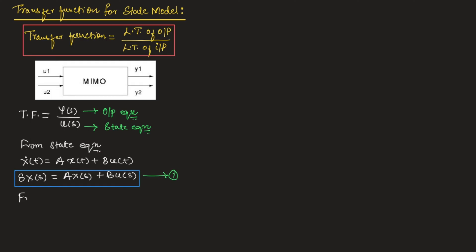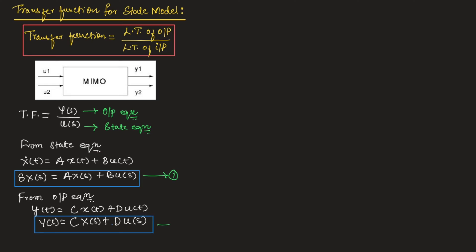Now let us consider the output equation. From the output equation, we can write Y(T) = C·X(T) + D·U(T). If we apply the Laplace transform to the above equation, we can write Y(S) = C·X(S) + D·U(S). Let us take this as equation number 2.